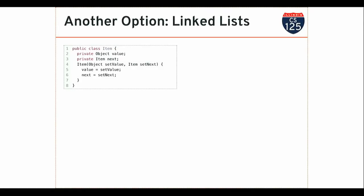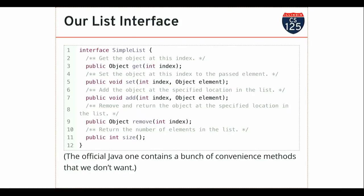For the week before spring break, we talked about how to implement this interface. This is a good review about interfaces — this is the contract that our implementations have to abide by. They need to provide these five functions with the right signatures, and those functions have to do the thing described in the interface documentation. An interface is a contract between people who are going to use your implementation and the implementation itself.